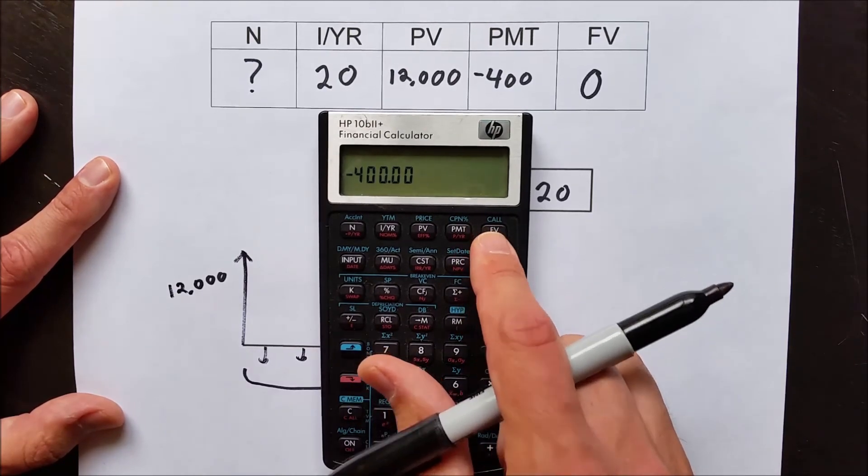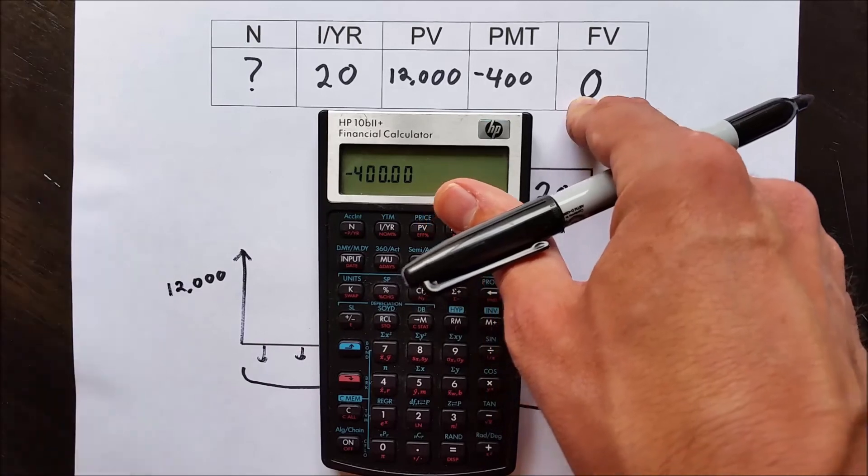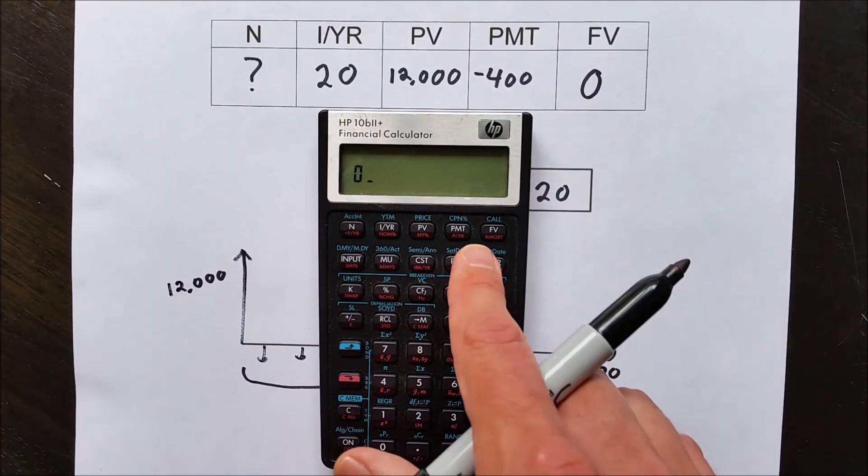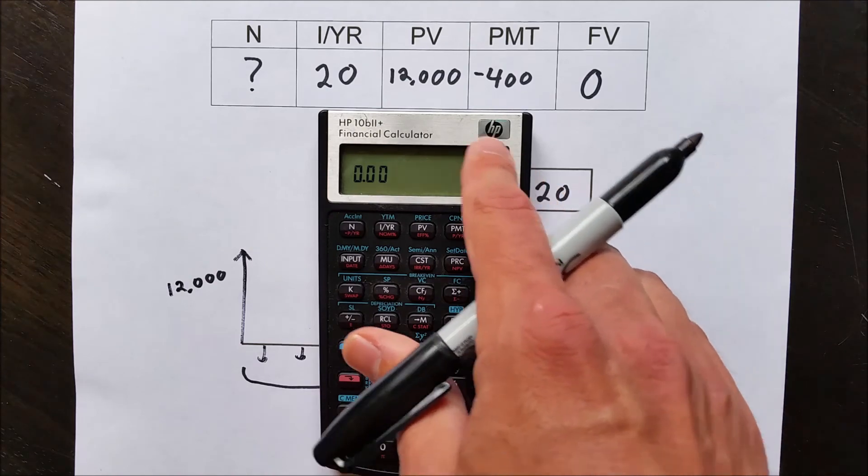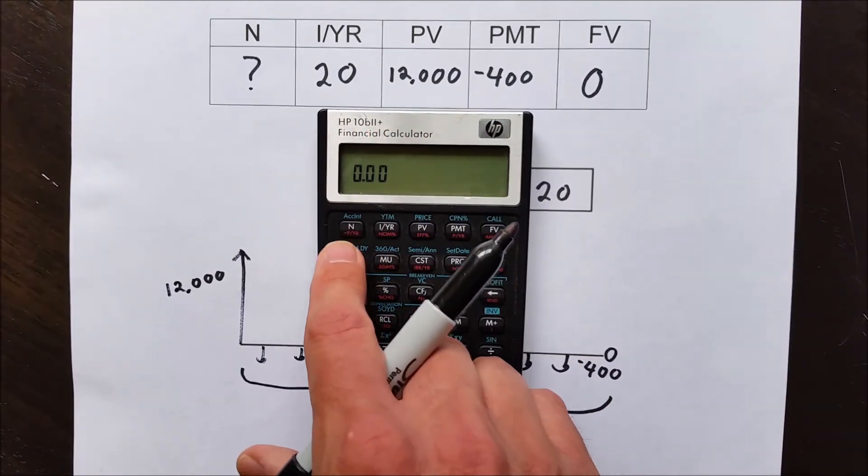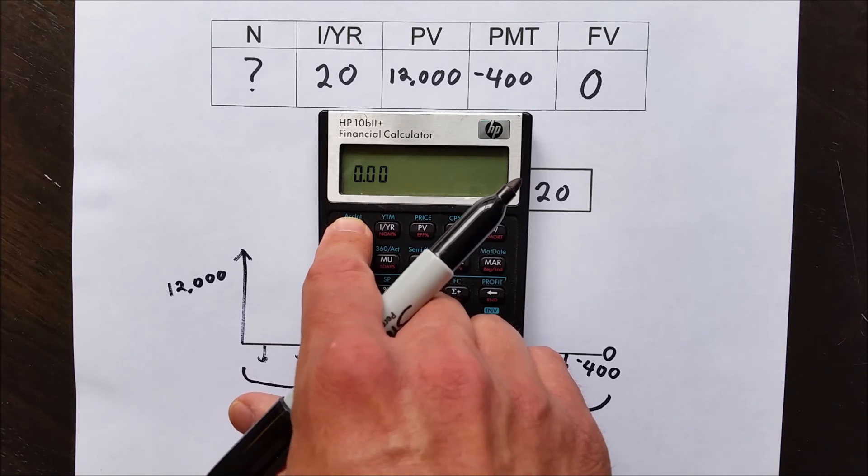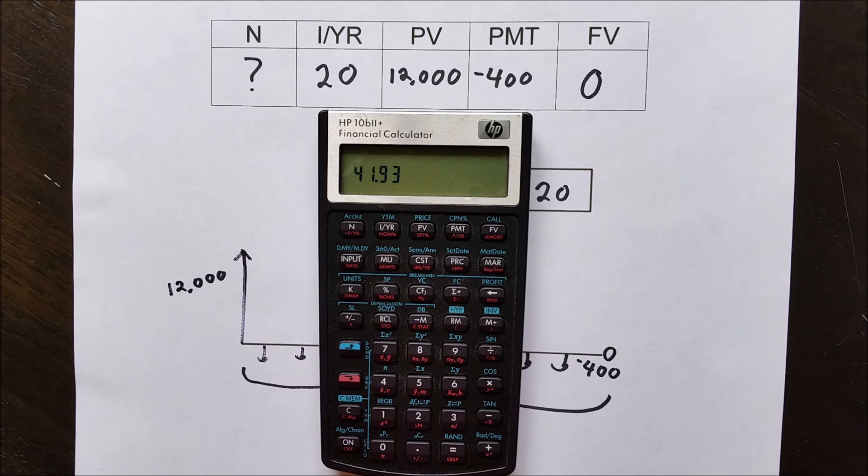And then future value. We know that Tom wants to have the debt completely paid off, so we just enter zero and hit future value. Now that we know those four, all we simply have to do is hit N to solve for the fifth. And it comes out to 41.93 months or just about three and a half years for Tom to pay off this debt. So that means if Tom has a credit card with a balance of $12,000 and an interest of 20%, and he makes monthly payments of $400, it'll take him just over 41 months to completely pay off this debt, 41.93 or just about three and a half years.